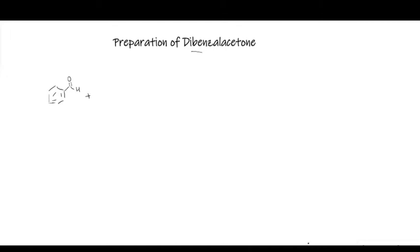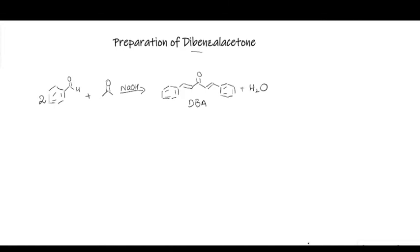Dibenzyl acetone can be prepared by the reaction of benzaldehyde with acetone in the presence of sodium hydroxide, which acts as a base, to give dibenzyl acetone. In fact, two moles of benzaldehyde react with one mole of acetone to give one mole of dibenzyl acetone with the liberation of water. Dibenzyl acetone is in short known as DPA. This is the balanced chemical equation for this reaction, and the mechanism follows a dual condensation mechanism.